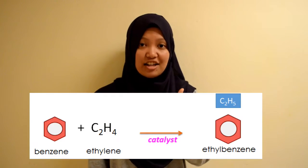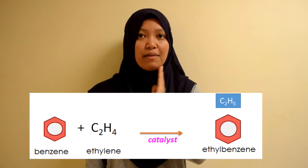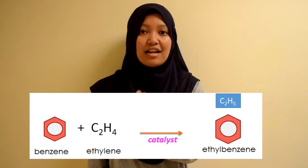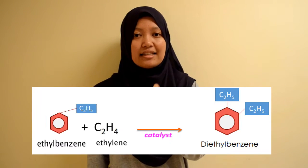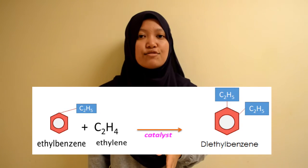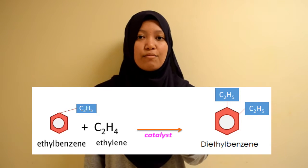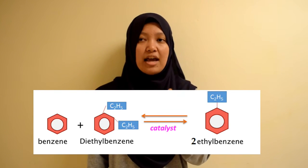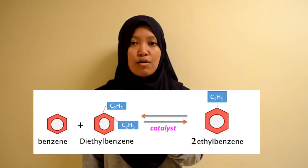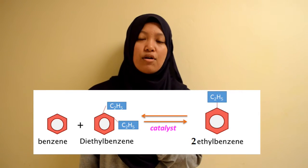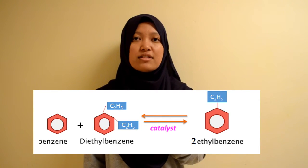For my part, I want to explain the principal reactions. There are three principal reactions for this process, which are alkylation one, alkylation two, and transalkylation. In alkylation one, ethylene will react with benzene and will produce ethylbenzene with the presence of a zeolite catalyst. In alkylation two, ethylbenzene will react with ethylene and will produce diethylbenzene. In transalkylation, diethylbenzene will react with benzene and will produce two moles of ethylbenzene. This process is called transalkylation, which is a reversible process.